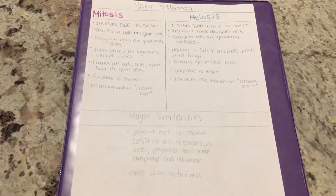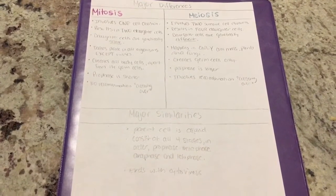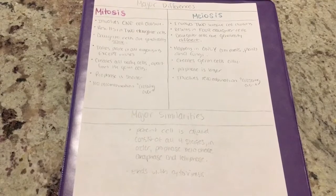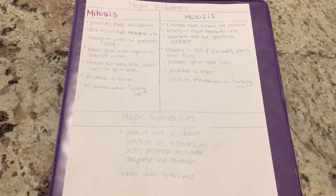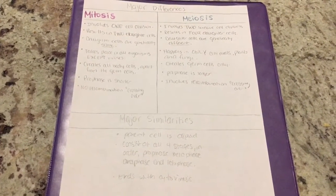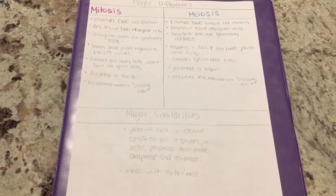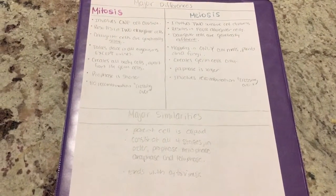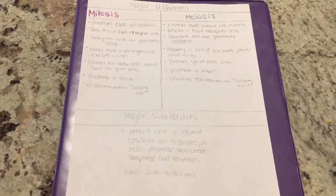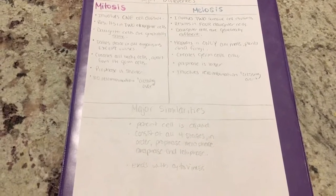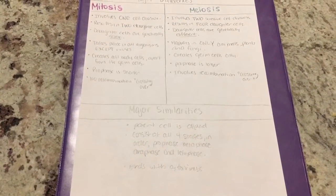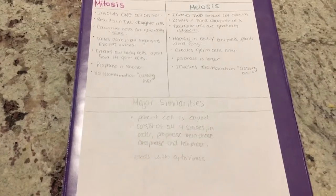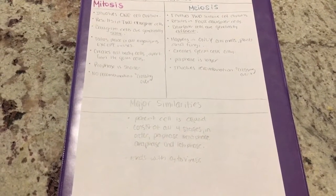Meiosis involves two successive cell divisions and results in four daughter cells. Daughter cells are genetically different. It happens only in animals, plants, and fungi. It creates germ cells only. Prophase stages are longer, and it does involve recombination or the process of crossing over.